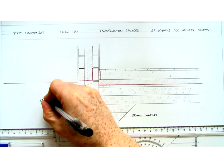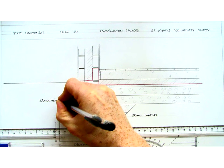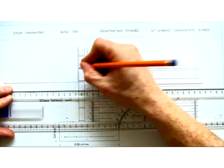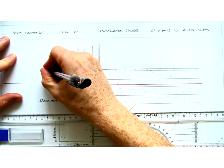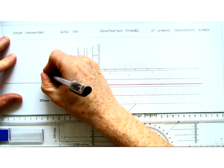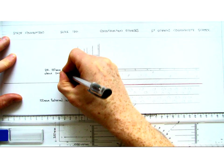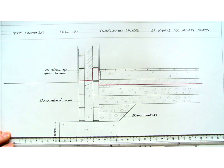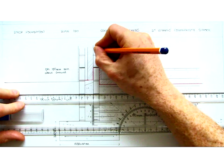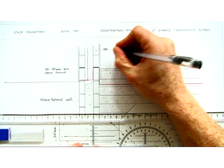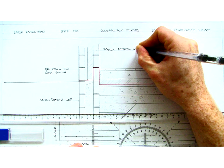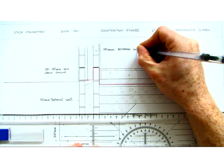100mm external wall. 30mm inner wall. 50mm insulation. DPC - 150mm minimum above the ground. 100mm internal wall. And you can also finish off by indicating a number of other dimensions.